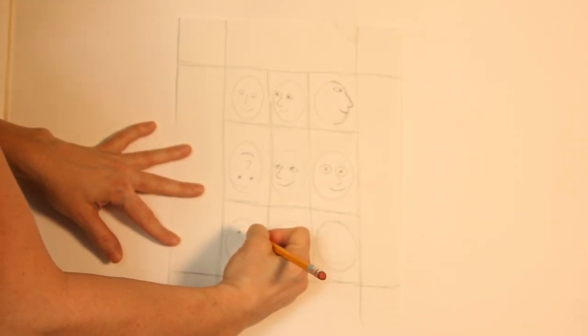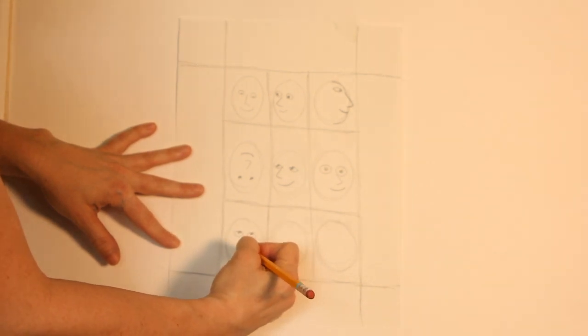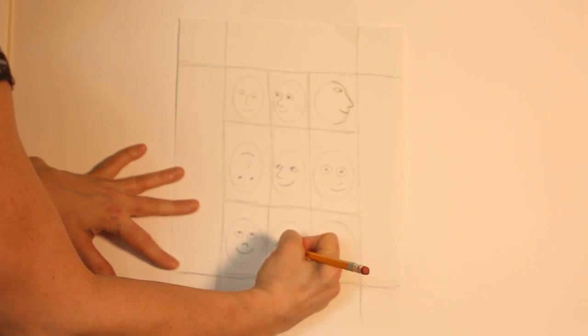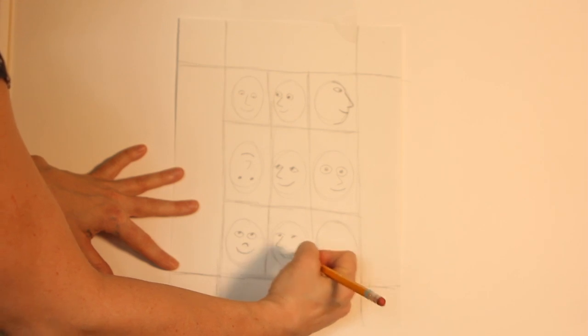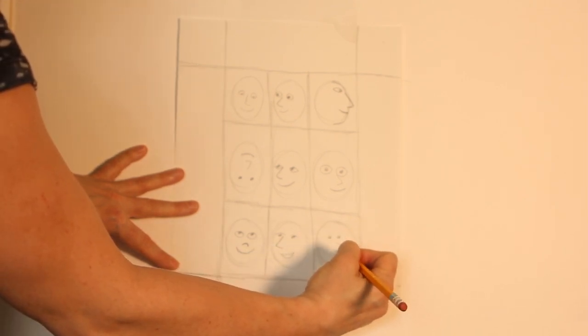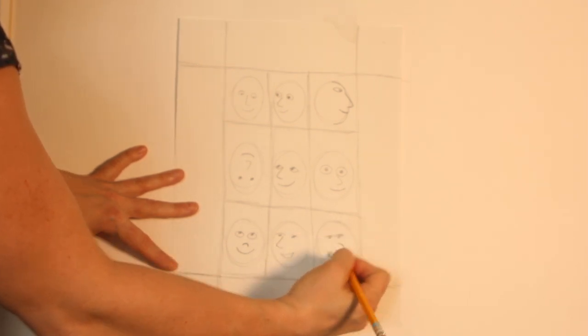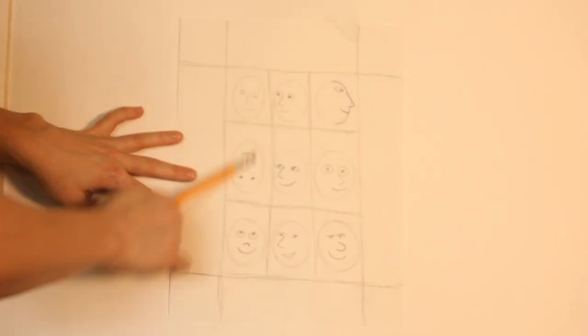So now we're just going to fill in all the faces. And some of the noses, they could be just like a curve. You could have them smiling. They all don't have to look exactly the same. Look at this big nose. So now I have all the faces on the inside.